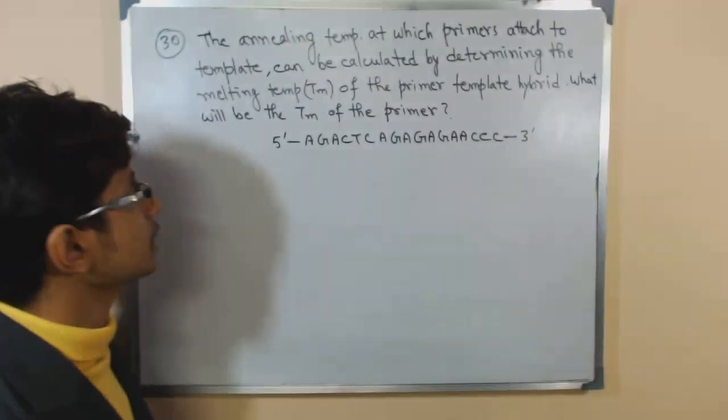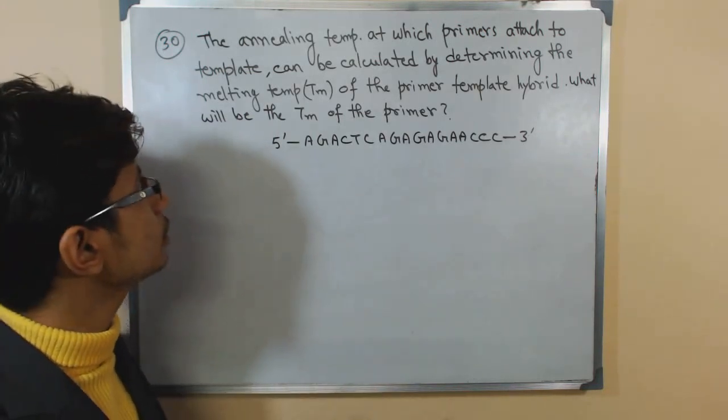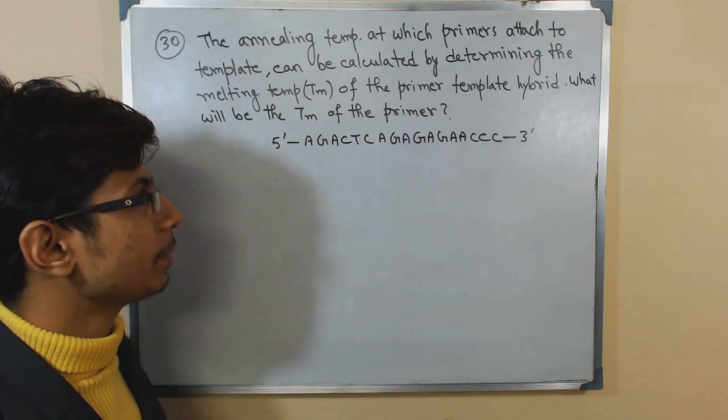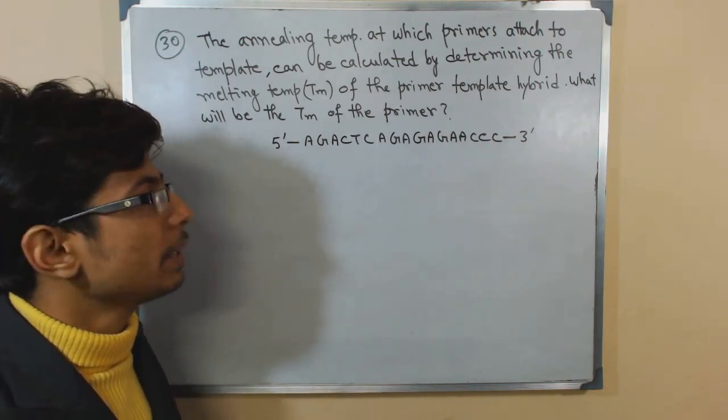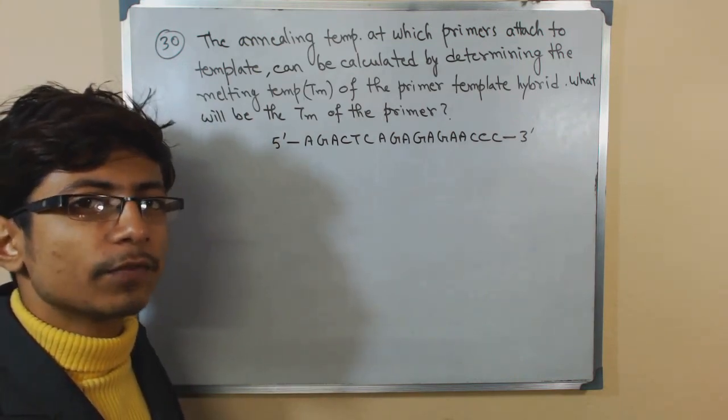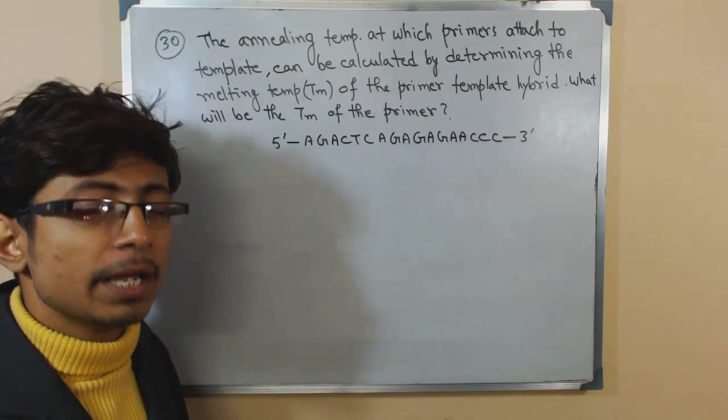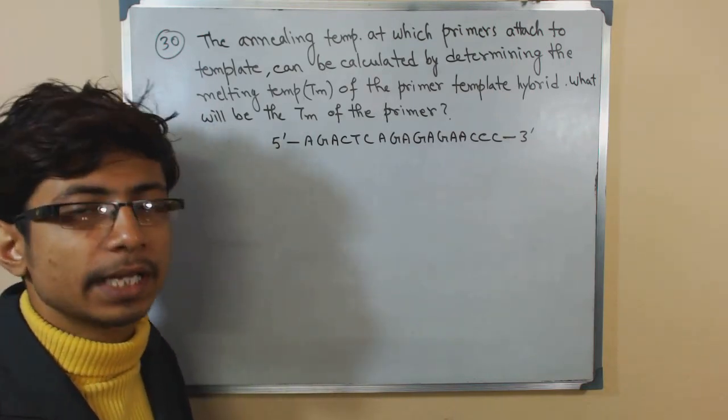The annealing temperature at which the primers attach to the template can be calculated by determining the melting temperature of the primer template hybrid. If you calculate the melting temperature or Tm, you can easily get an idea of the annealing temperature, which is very important for starting that PCR reaction.